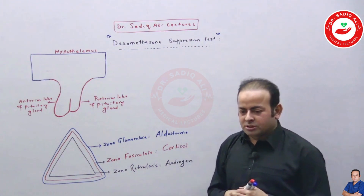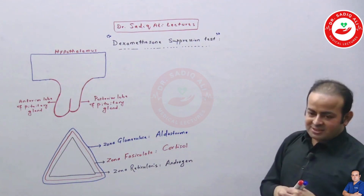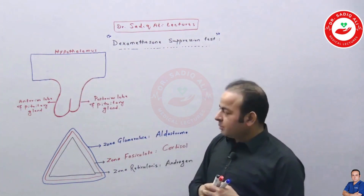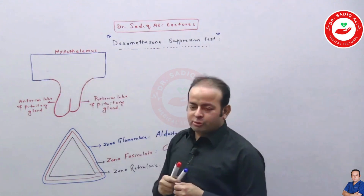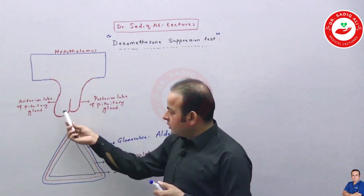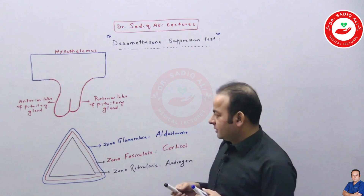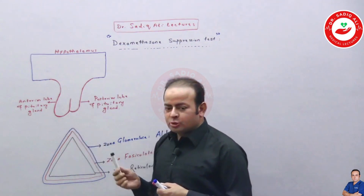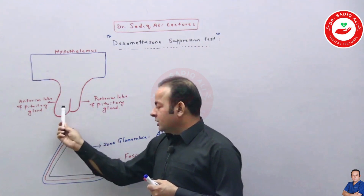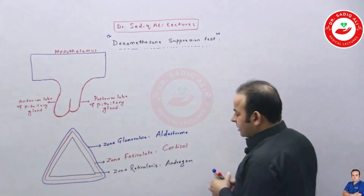Before going to the actual test, we should know some basics. The hypothalamus is a part of the brain present in the forebrain. After the hypothalamus, we have the pituitary gland, which is called the master gland of the body or hypophyseal gland, present in the sella turcica of the sphenoid bone. The pituitary gland has two lobes: anterior and posterior, separated by the pars intermedia.